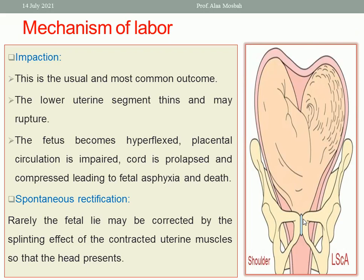The fetus becomes hyperflexed. The placental circulation is impaired and cord prolapse and compression leads to fetal asphyxia and death. The thinned lower uterine segment with development of a pathological retraction ring indicates impending uterine rupture, which is very dangerous.